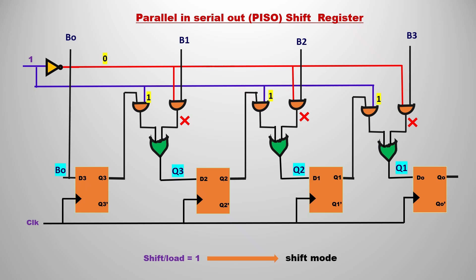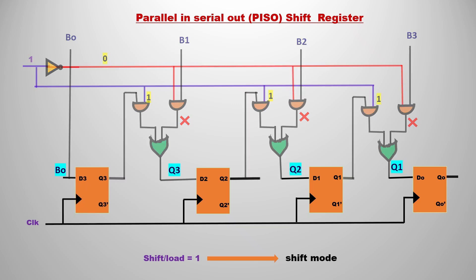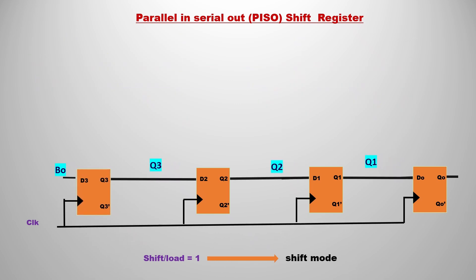When shift/load equals one, the circuit performs shift mode, which is the serial output stage. The complement becomes zero, so the first AND gate goes high and the second AND gate goes low — B1, B2, B3 inputs are not loaded. Instead, Q3 enters D2, Q2 enters the next flip-flop, and Q1 enters D1. In this way, after loading, Q3 propagates to the second flip-flop, Q2 to the next, and Q1 finally goes to D0 — this is the serial out operation.